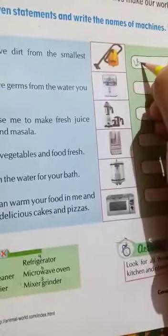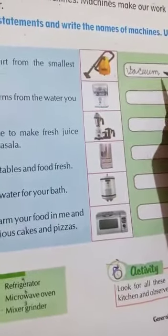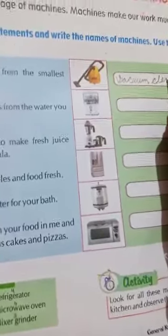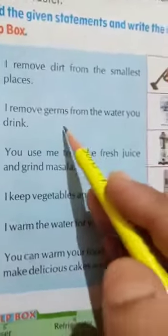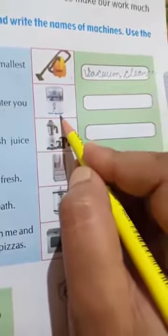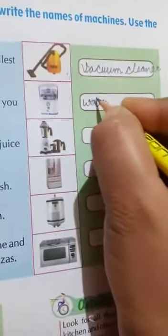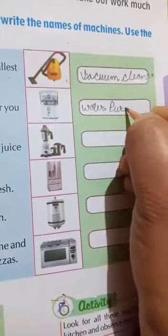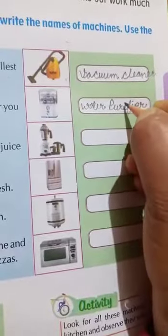Write here: V-A-C-U-U-M C-L-E-A-N-E-R. Vacuum cleaner. Now come to our next statement. Number 2: I remove germs from the water you drink. Which picture is this? This is water purifier.